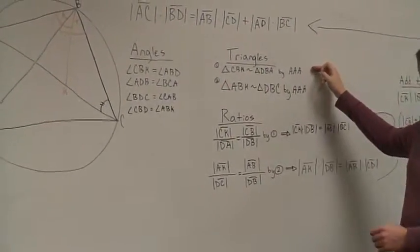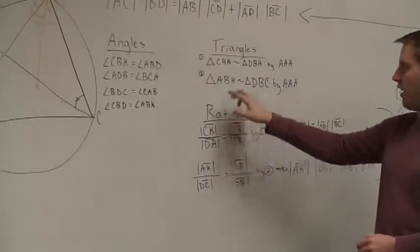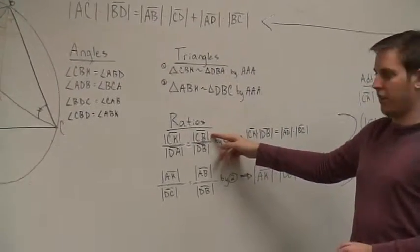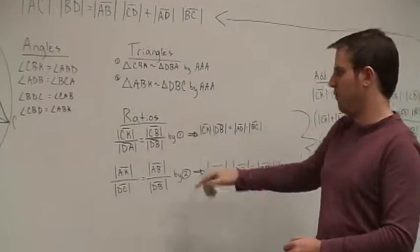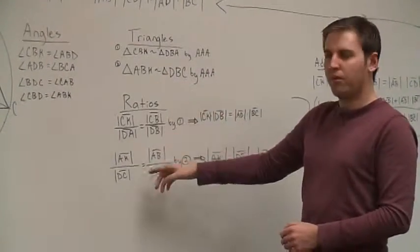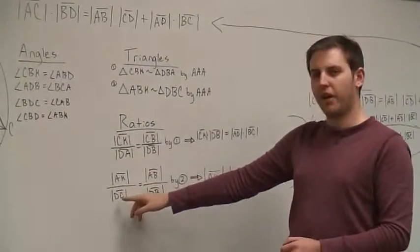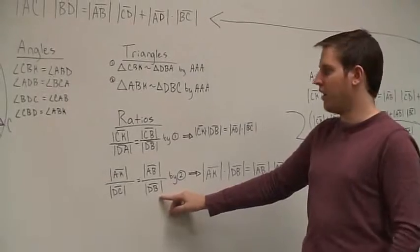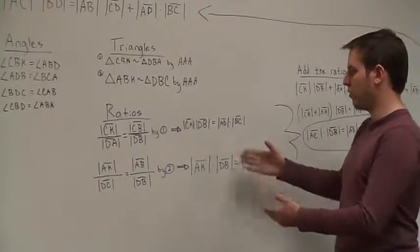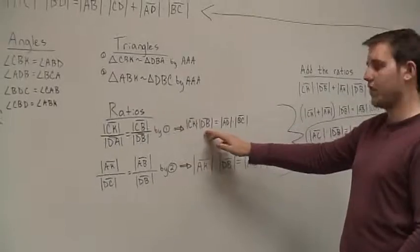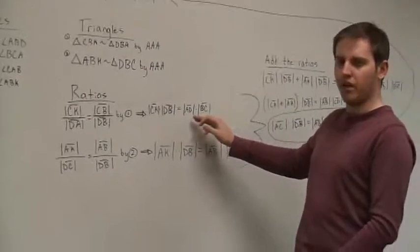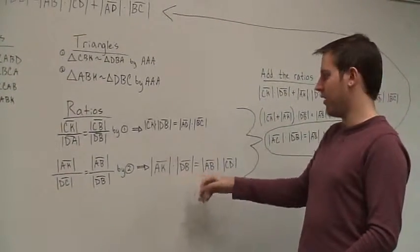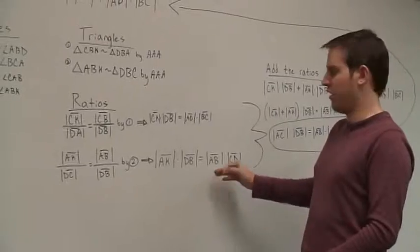From the two similar triangles, we get the following ratios. From the first similarity, CK over DA equals CB over DB. From the second similarity, AK over DC equals AB over DB. When we cross multiply these ratios, we get: CK times DB equals AD times BC. We also get: AK times DB equals AB times CD.